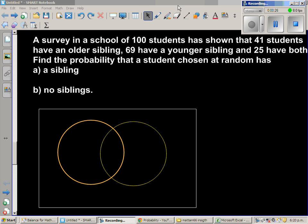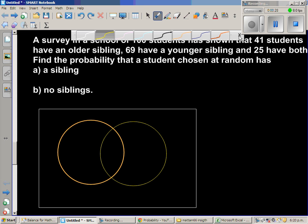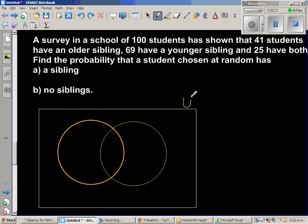The rectangle is called the universal set or the sample space. Let us call that U or you can call that S. This is the sample space and you have got two sets. One is a set of students who have older sibling and a set of students who have younger sibling.